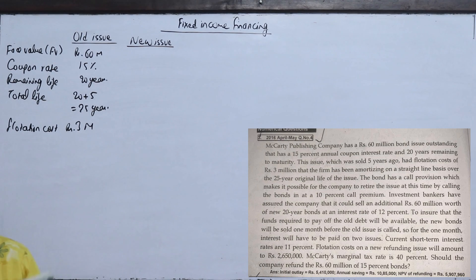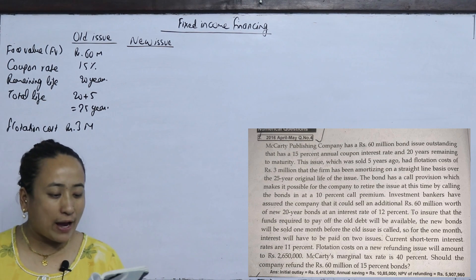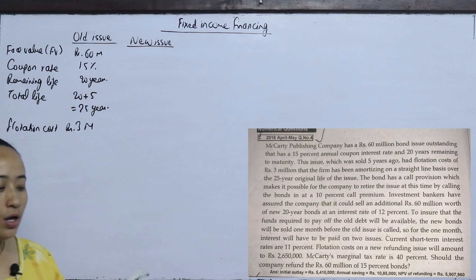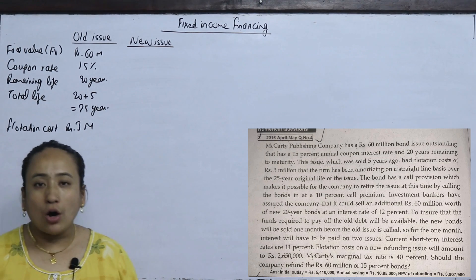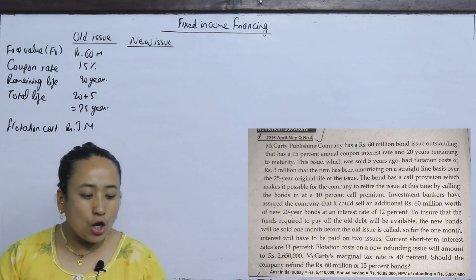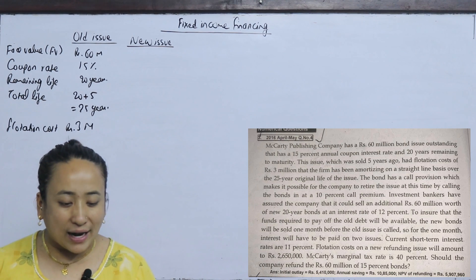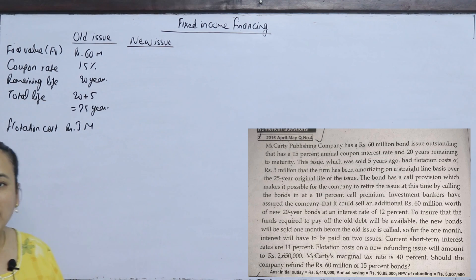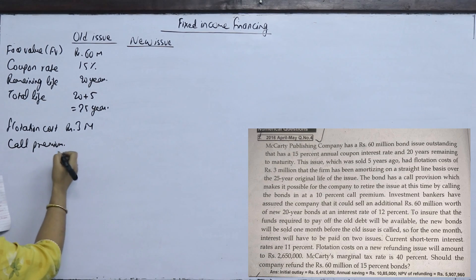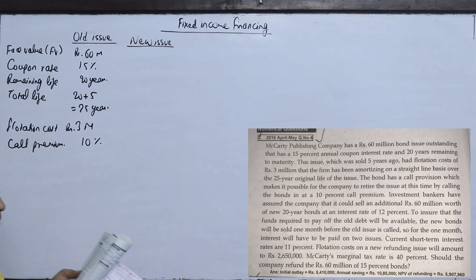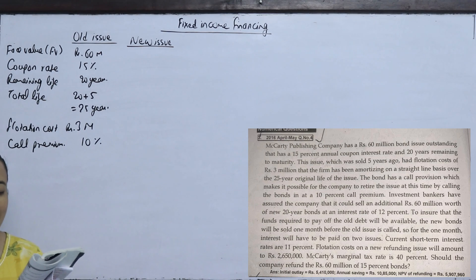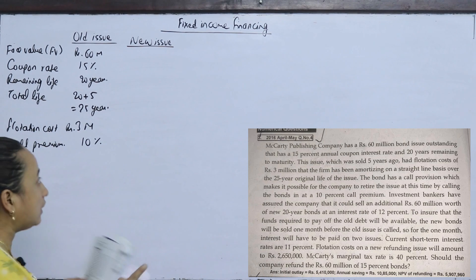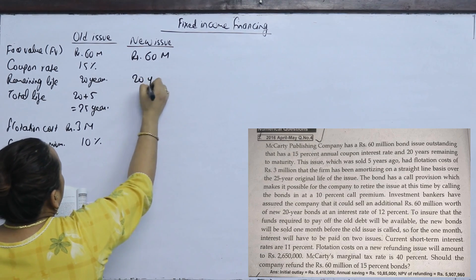The firm has been amortizing on a straight-line basis over 25 years. The bond has a call provision which makes it possible for the company to retire the issue at this time by calling the bond at a 10% call premium. Investment bankers have assured the company that it could sell an additional $60 million worth of new 20-year bonds.